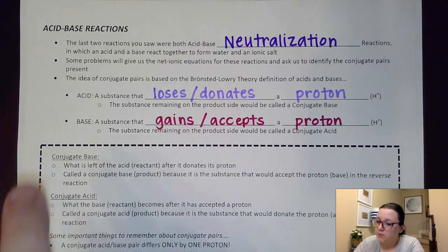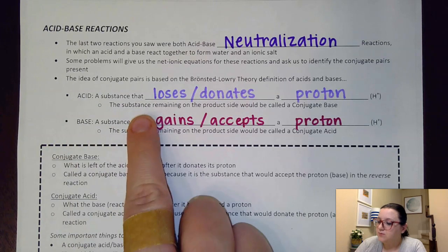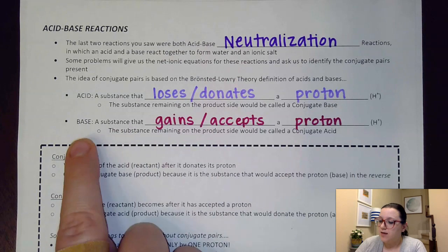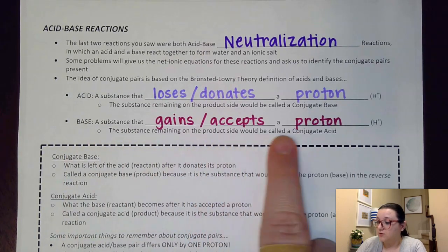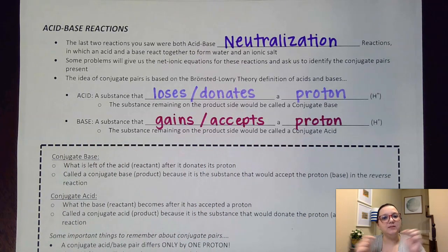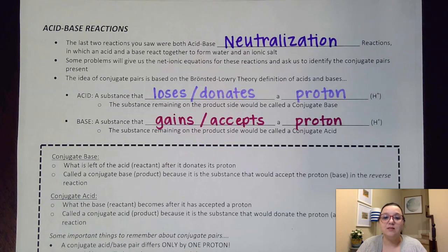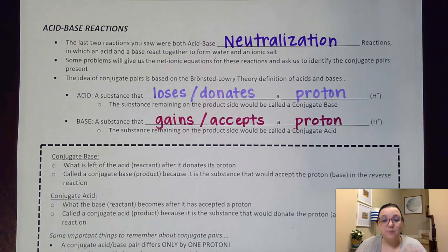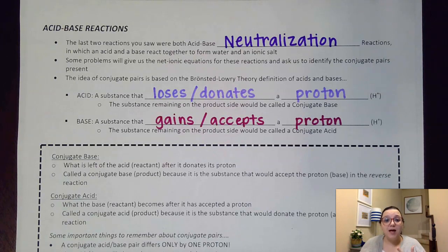Here's where the naming gets a little tricky. If you notice, the substance remaining on the product side from the acid would be called a conjugate base, whereas the base on the product side would be called a conjugate acid. We have to be really careful there because those opposite names get tied to each other. The reason is because if I were to reverse the reaction, these would be acting in that acid-base setup, gaining and losing those protons in the same manner that my reactants could.